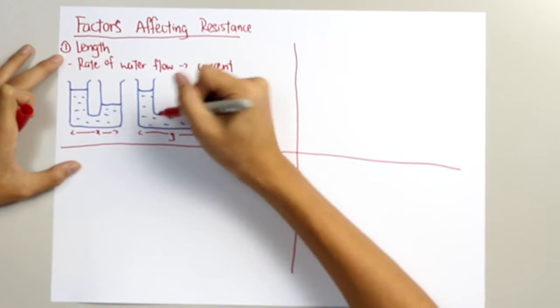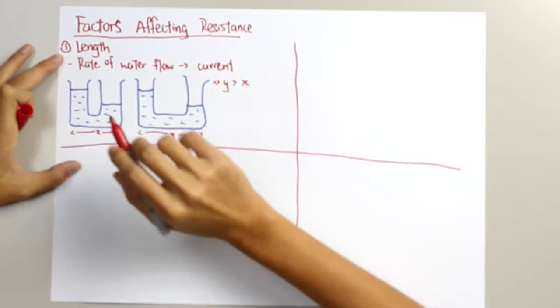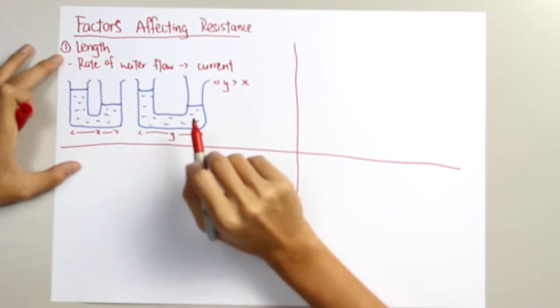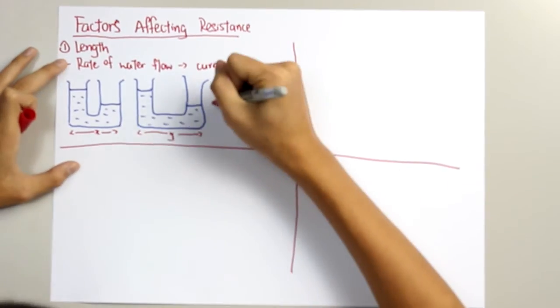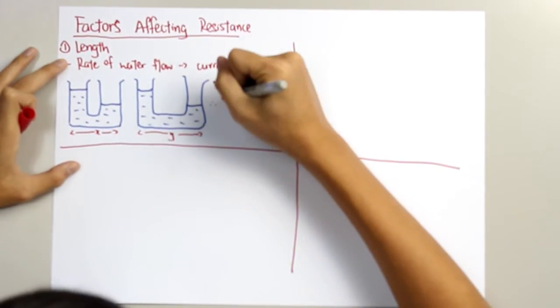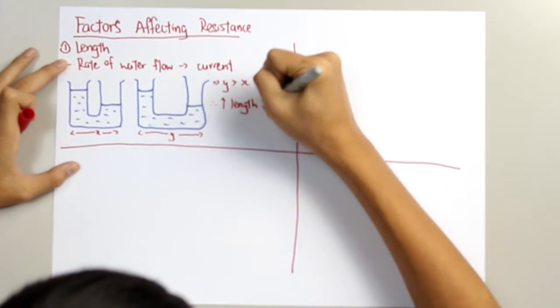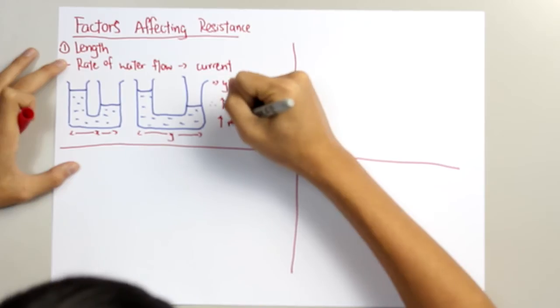Therefore, it takes longer time for the water to travel from this point to this point. And so, we can conclude that the greater the length, the higher the resistance.